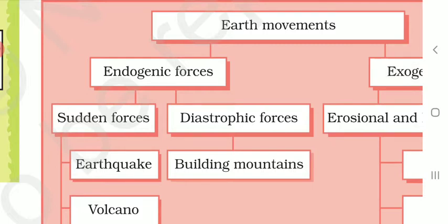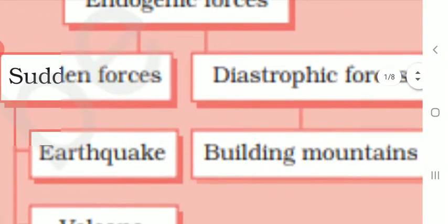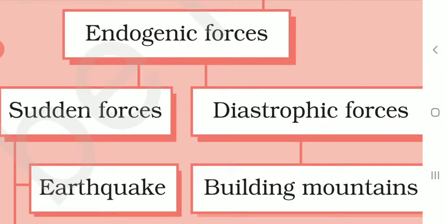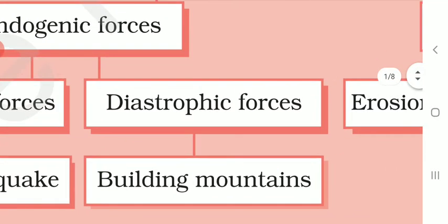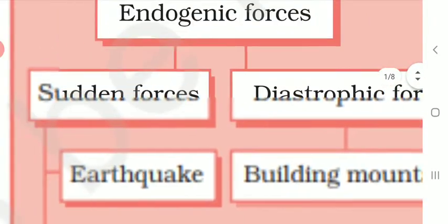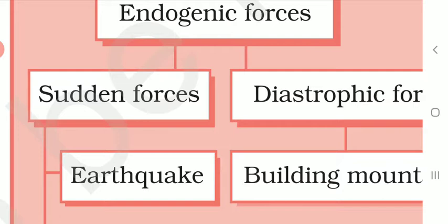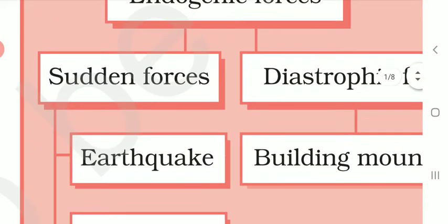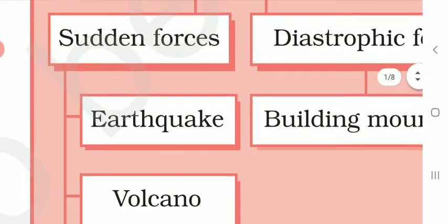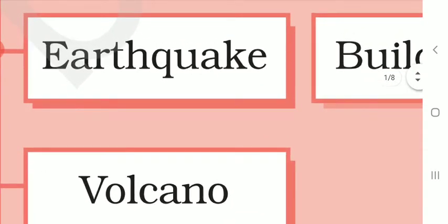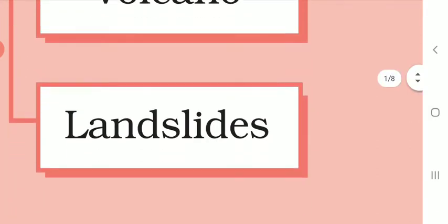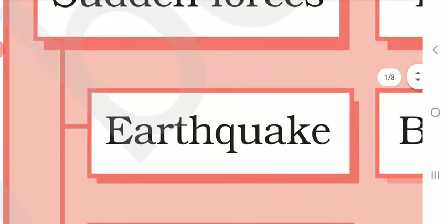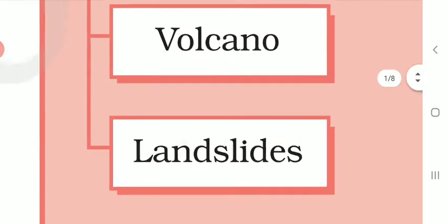The endogenic forces are of two types: sudden forces and diastrophic forces. Sudden forces are those which take place suddenly on the surface of the earth. These sudden forces cause earthquakes, volcanoes, and landslides on the surface of the earth.